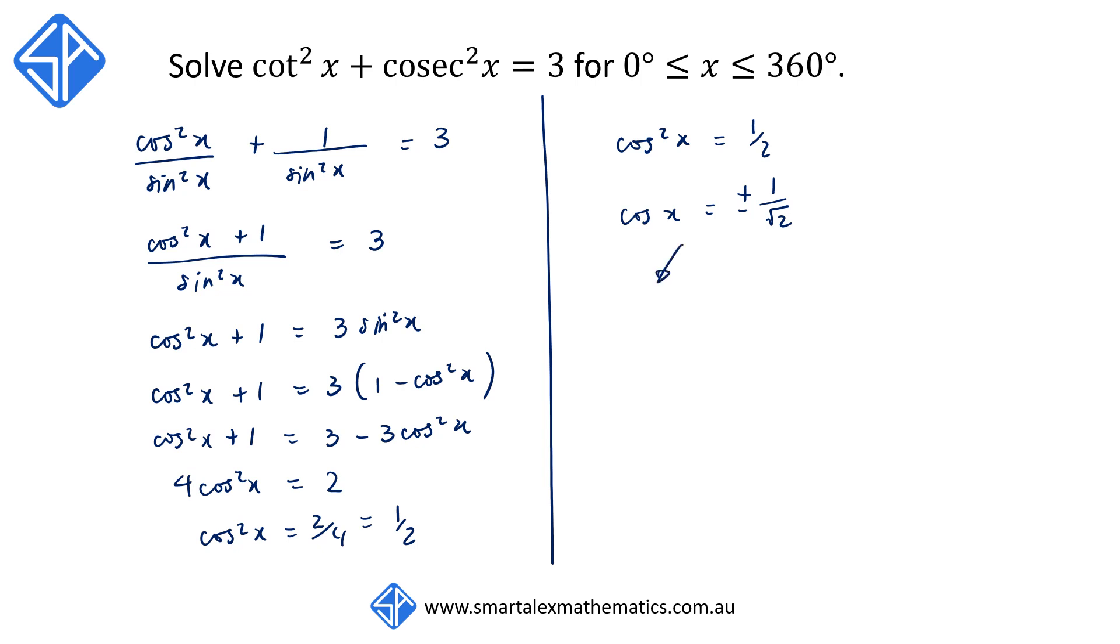So if cos x is equal to 1 on root 2 this means that x would be in the first and the fourth quadrant. So our answer would be 45 degrees or 315 degrees.